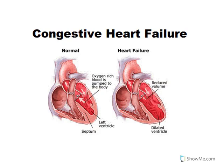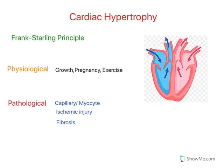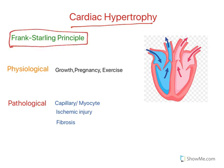Now look at the diagram — this is a normal heart, and this is a congestive heart failure condition. Due to congestion, excess blood accumulates inside the heart. To accommodate that excess blood, the heart size increases; this is known as cardiac hypertrophy. Cardiac hypertrophy occurs to accommodate the excess blood, but it will further aggravate the heart failure condition. There is a principle related to this called the Frank-Starling principle.